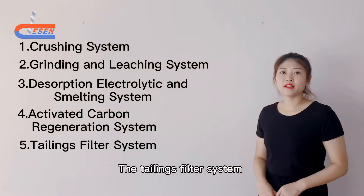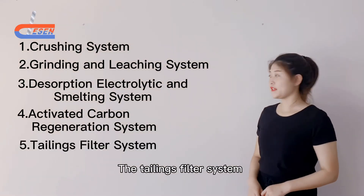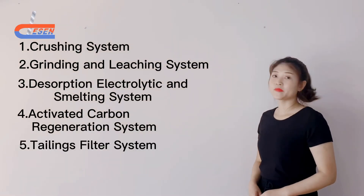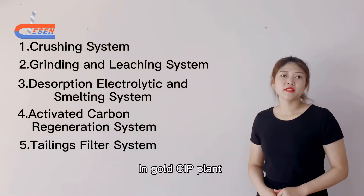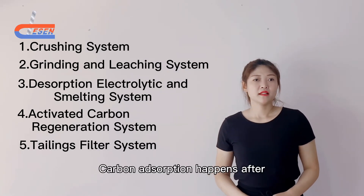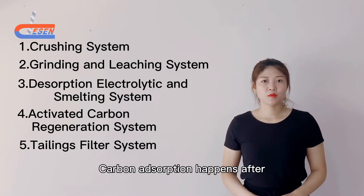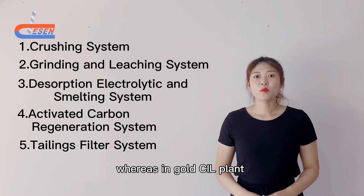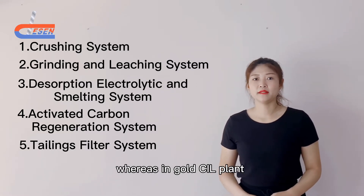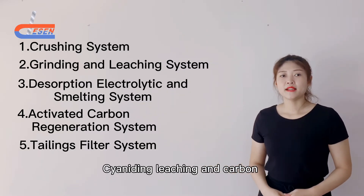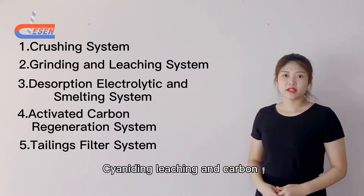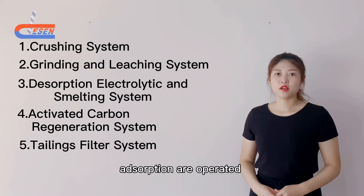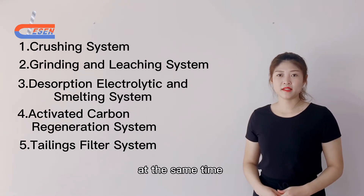There is also a tailings filter system. In the gold CIP plant, carbon absorption happens after the cyanide leaching, whereas in the gold CIL plant, cyanide leaching and carbon absorption are operated at the same time.